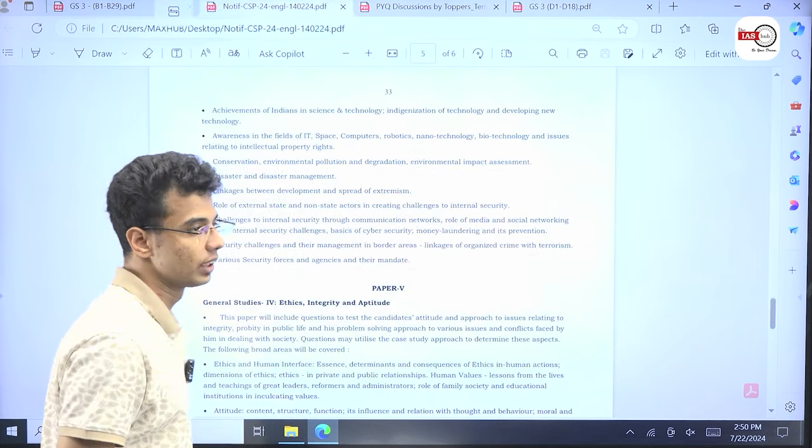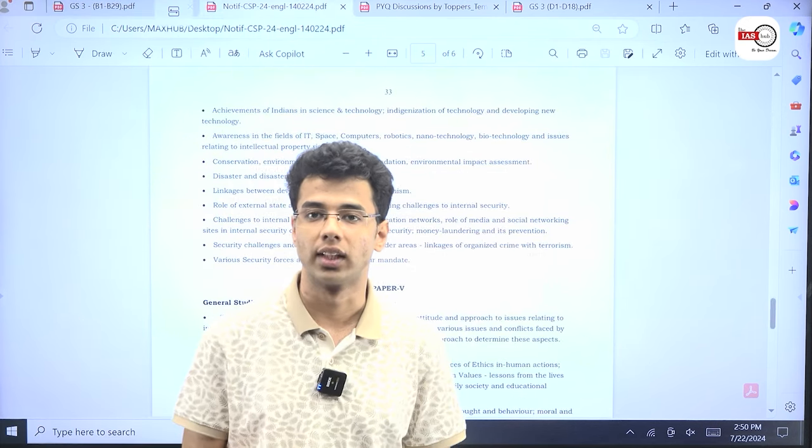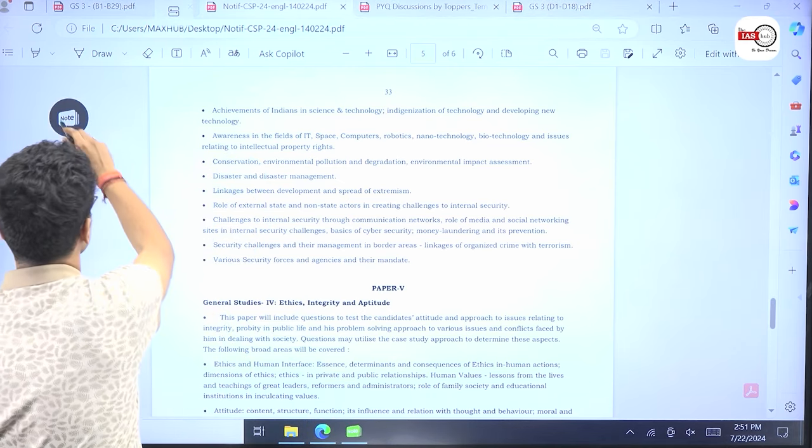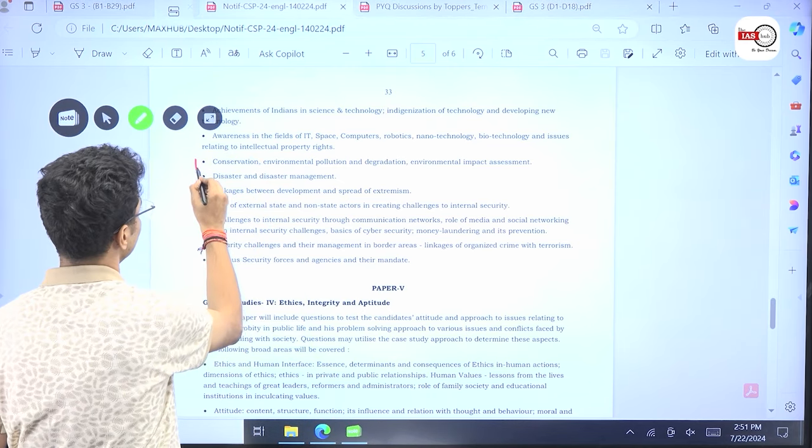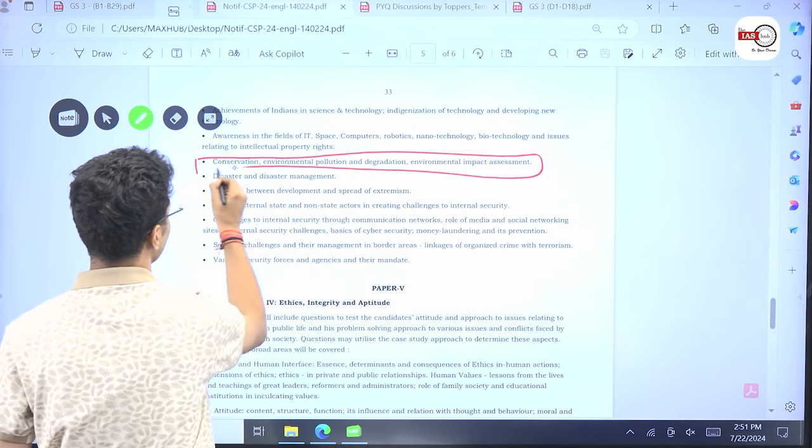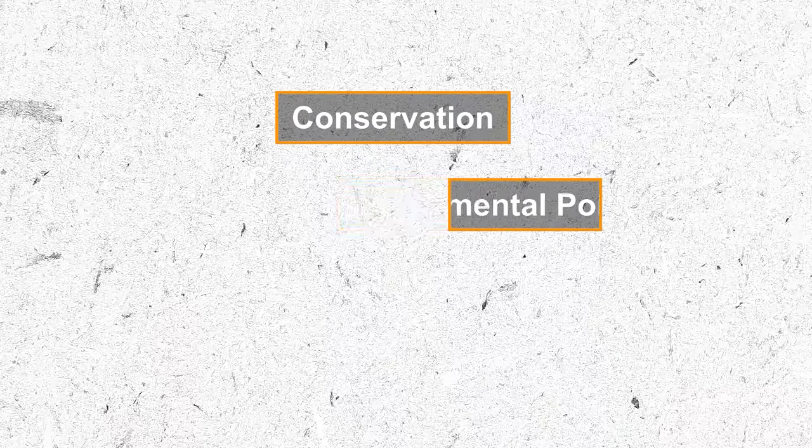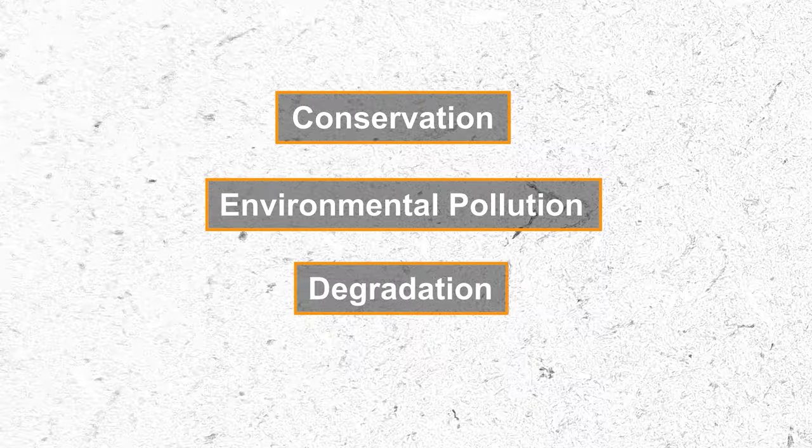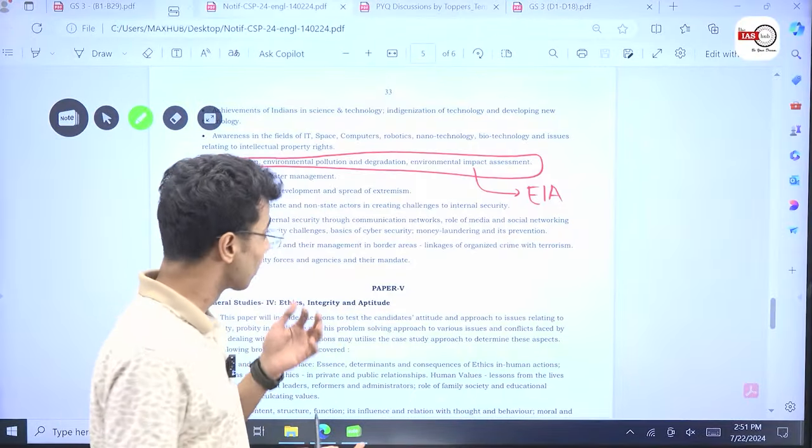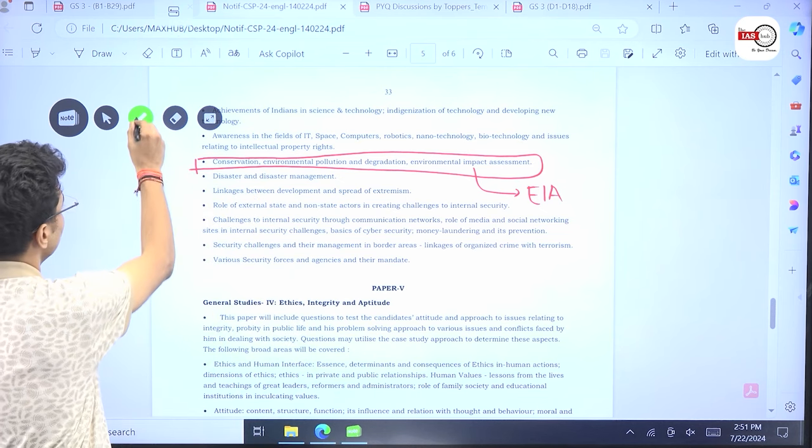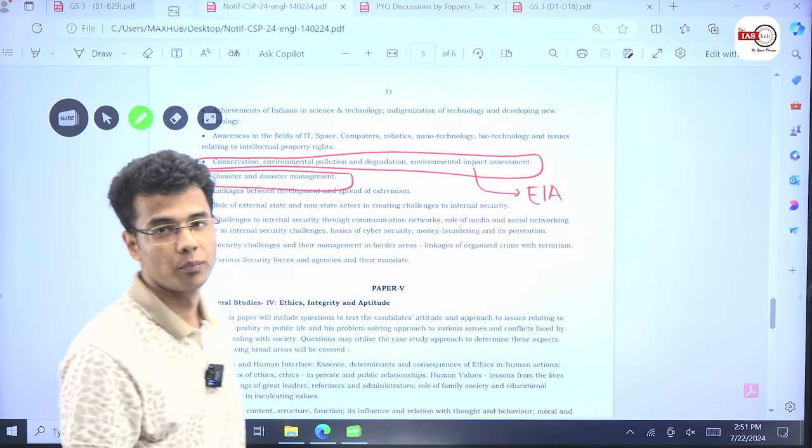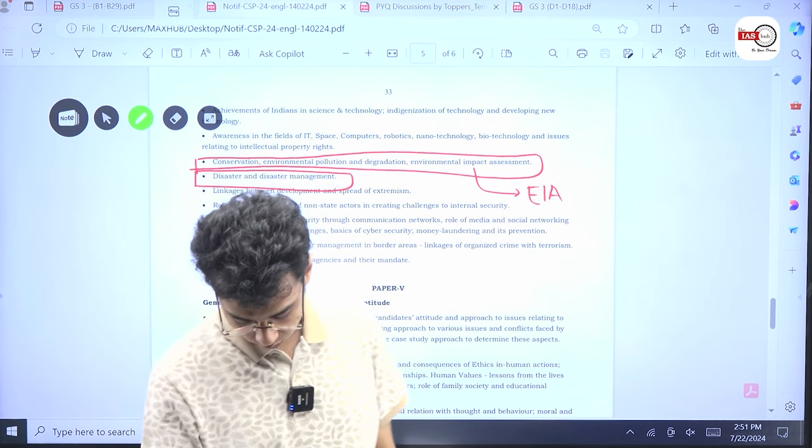If you look at the syllabus, we would see that the syllabus of environment and disaster management, they're only just one-liners. So if you look at the syllabus of environment, it only talks about conservation, environmental pollution and degradation and environmental impact assessment. So broadly speaking, there are four things. And if you look at the syllabus of disaster management, disaster and disaster management. So these are the syllabus of both these themes.